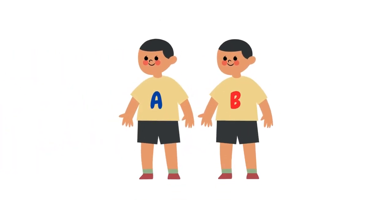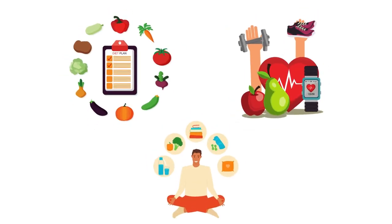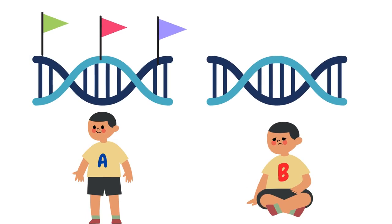At the end of the day, twin A and twin B may be genetically identical in terms of their genetic sequence and may have a near identical genome. Yet due to their different diets, habits, and lifestyles, variations within their epigenome will most likely occur, resulting in them having different physical manifestations.